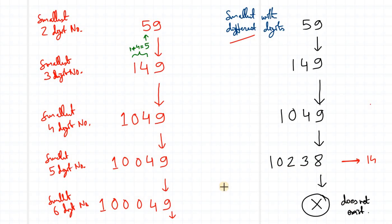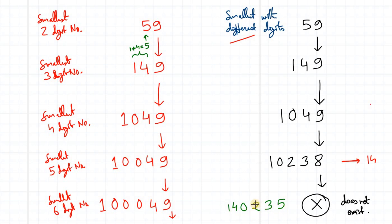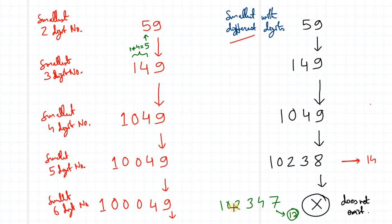Let me show you that a smallest 6-digit number with all different digits simply does not exist. If I try writing something like 5, 3, 2, 0, 4, 1, the digit sum is 5 plus 3 plus 2 plus 0 plus 4 plus 1 equals 15, not 14. If instead I try 7, 4, 3, 2, 1, the digit sum is 17, not 14. So the smallest 6-digit number with different digits whose digit sum is 14 does not exist.